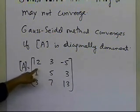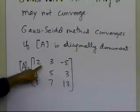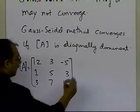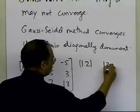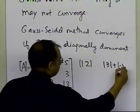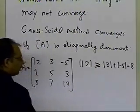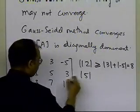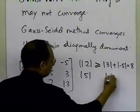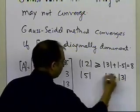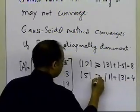What makes this diagonally dominant is that you have to look at each of the diagonal terms and take the absolute value. So taking the absolute value of 12, then you take the absolute value of the rest of the elements — 3 and minus 5 — and you add them up, you get 8. Is it greater than or equal? Yes. Same thing here: the absolute value of 5, which is the diagonal element, is it greater than or equal to the absolute value of 1 plus the absolute value of 3, which is 4? Yes, it is.